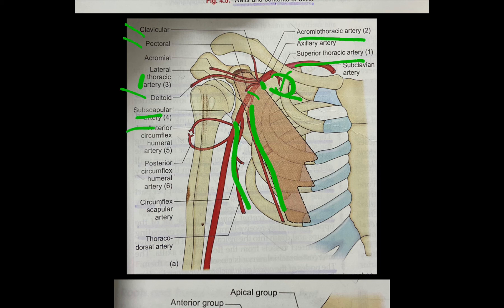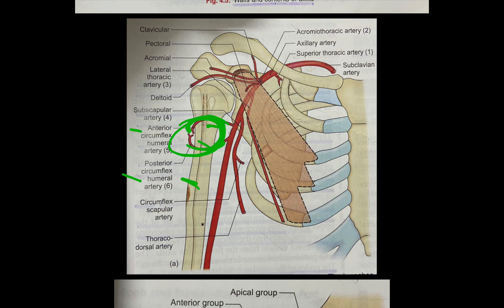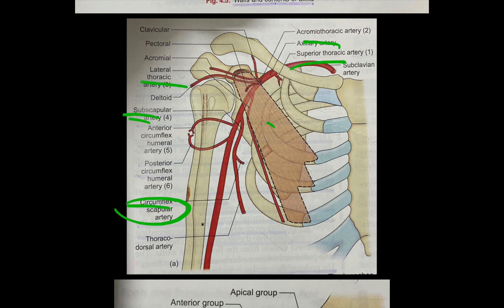From the third part, this one is the subscapular artery, which gives a branch — the circumflex scapular artery. This one is the anterior circumflex humeral artery and this one is the posterior circumflex humeral artery. They are anastomosing with each other, forming an arterial circle around the surgical neck of humerus — as you can see, this is the humerus.